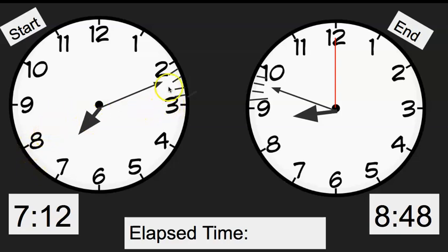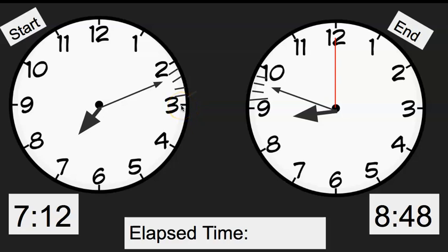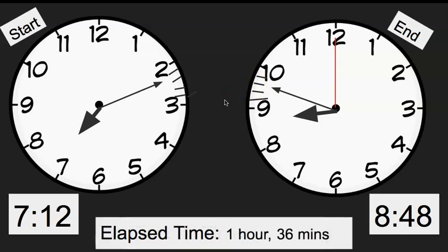Then I'm going to move my minute hand to count by fives first and then go back and count the ones. So five, ten, fifteen, twenty, twenty-five, thirty. Now I'm going to go back and count the ones: thirty-one, thirty-two, thirty-three. I have to get to the 3 in order to count by fives, and then over on this clock I ended at the 9 — thirty-four, thirty-five, thirty-six. So my elapsed time would be one hour and 36 minutes.